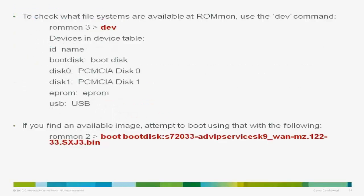The command is simple: boot followed by the file system, followed by the image. If you don't know what file systems are available in ROMMON, you can do a DEV command, which lists all available file systems. Then go one by one and do a DIR on each to find any available image.